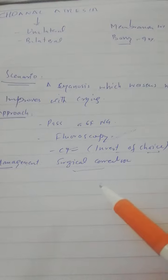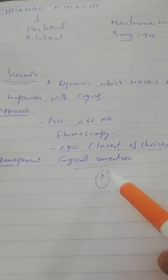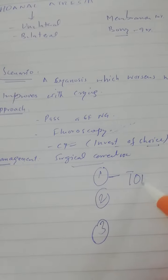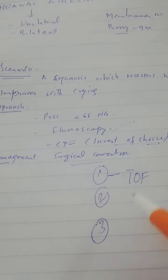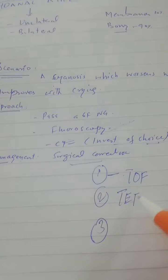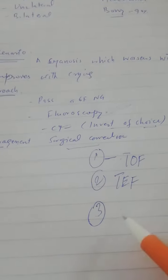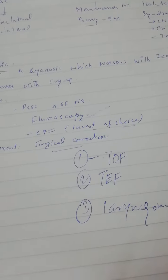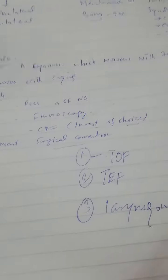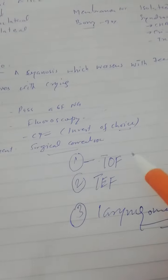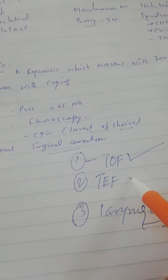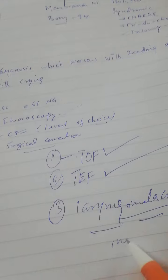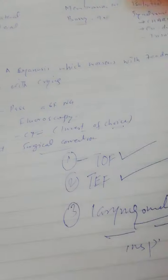The close differentials usually which are given in MCQs are tetralogy of Fallot, tracheoesophageal fistula, and laryngomalacia. These are very close differentials. The differentiating points are presence of murmur, presence of respiratory findings, and respiratory stridor. These are the differentiating points from Choanal Atresia.